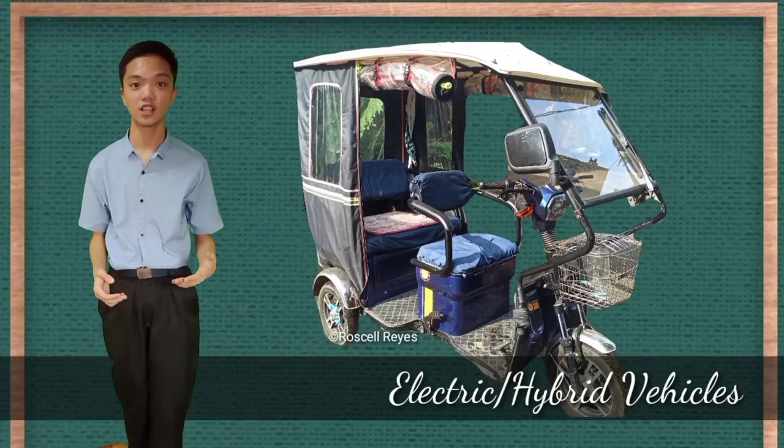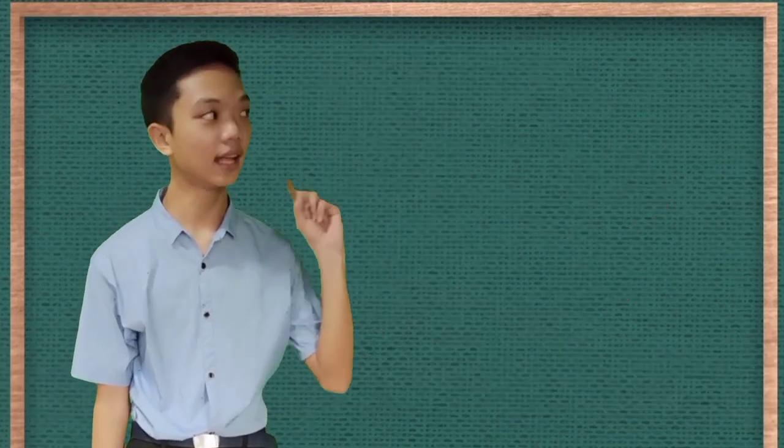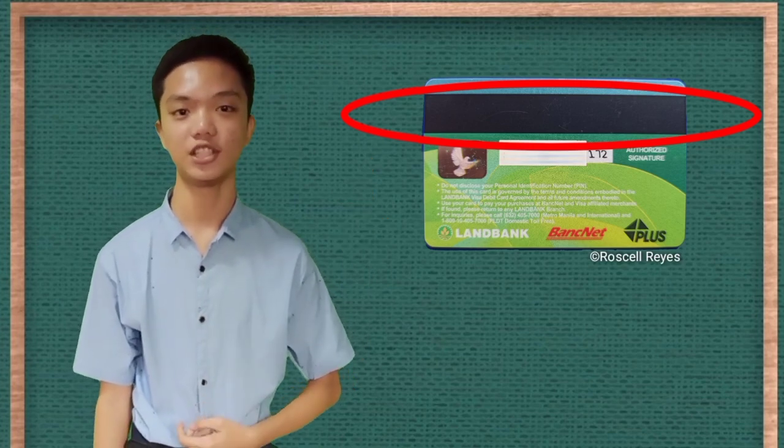Electric and hybrid vehicles also take advantage of electromagnetic induction. Another application of induction is the magnetic strand on the back of your personal credit card as used at the grocery store or ATM machine.